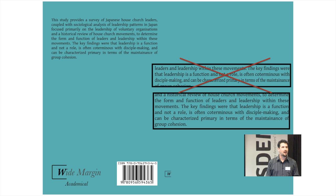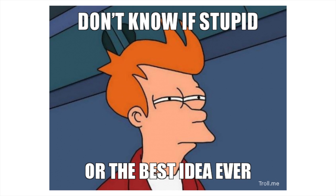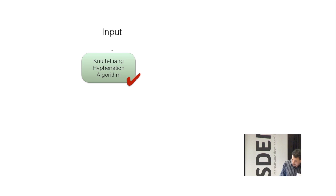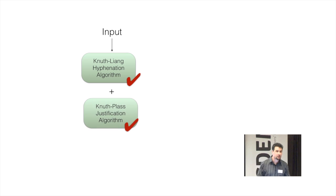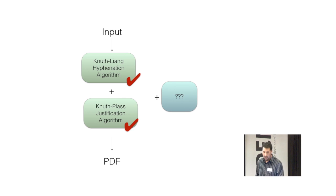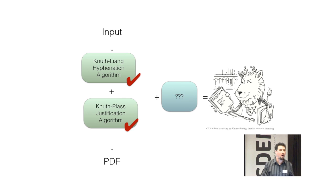And then I had a thought. And I have to live with the consequences of this thought every day. The thought went like this: I've got some code which takes some textual input, applies the hyphenation algorithm from TeX, applies the justification algorithm from TeX, and then produces a PDF output. I mean, I just need to add, like, a page breaking algorithm from TeX or something. How hard can it be?